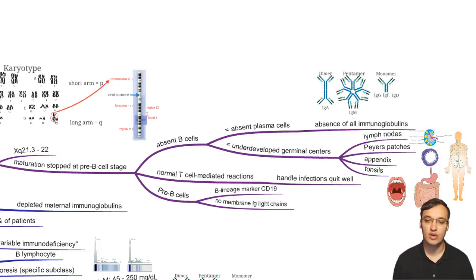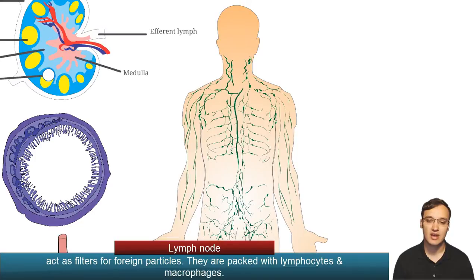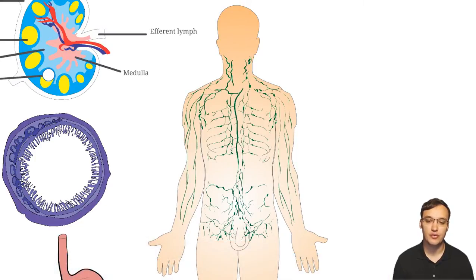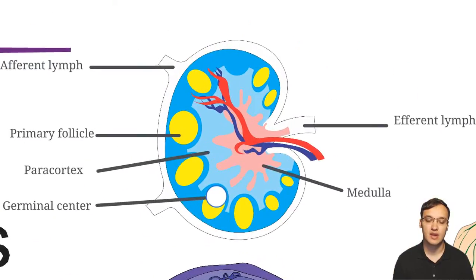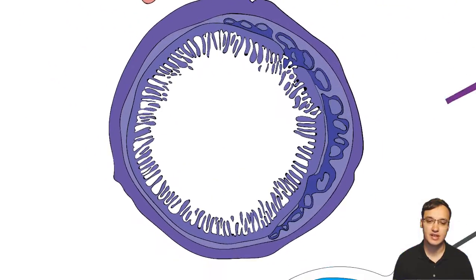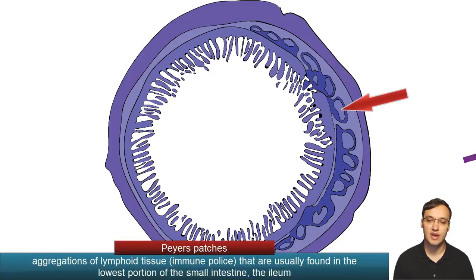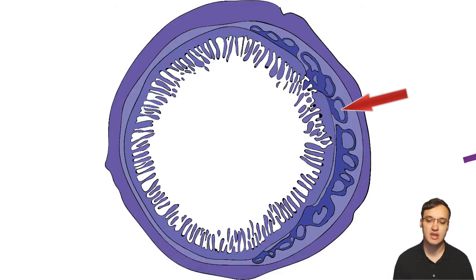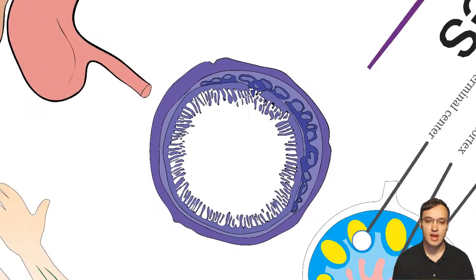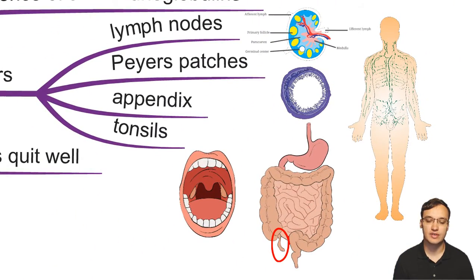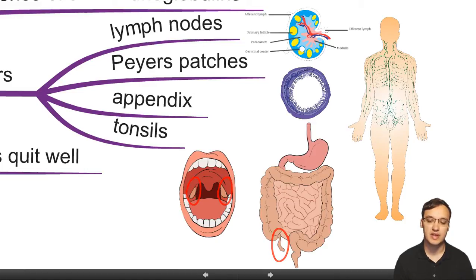Looking at the lymph node — these small dots filtering the lymph in the lymphatic system — inside the lymph node there are germinal centers where B cells are usually found, but in our case they will be underdeveloped. Similarly, Peyer's patches in the intestinal wall have germinal centers shown as a lighter color, which should contain B cells but will be underdeveloped. The appendix and tonsils also have these germinal centers, but all these places will be underdeveloped in Bruton's.